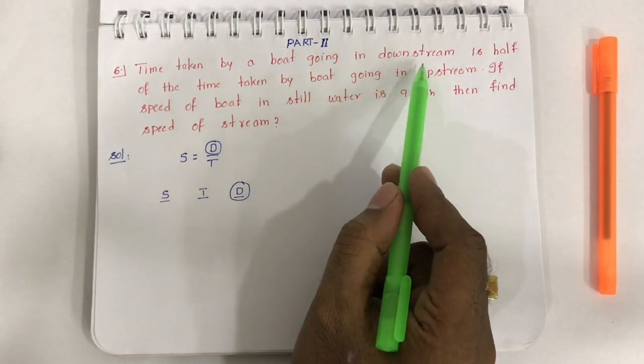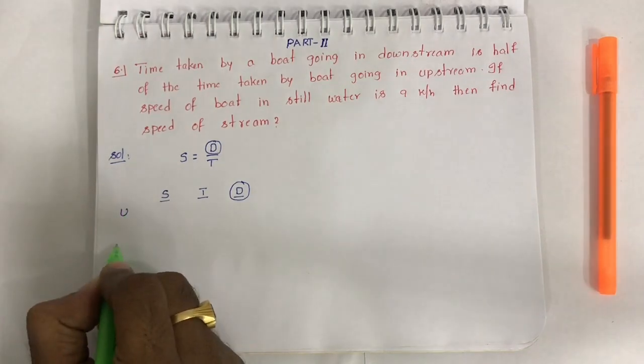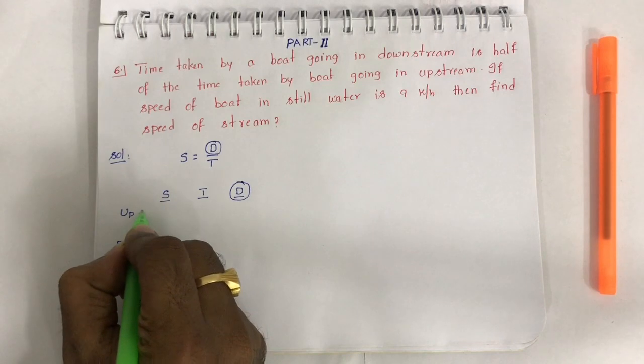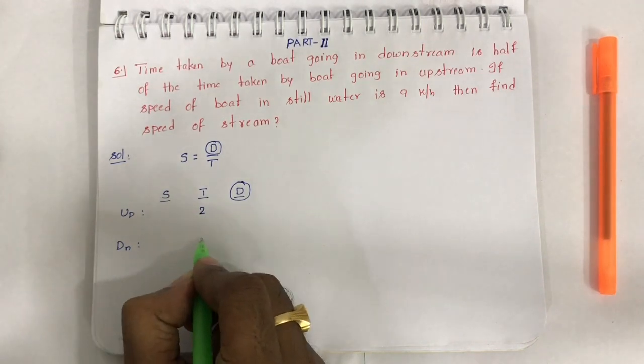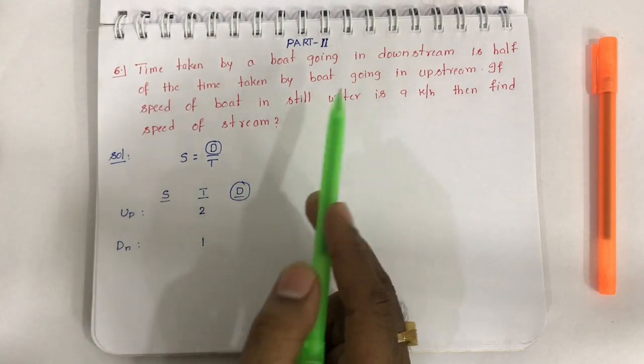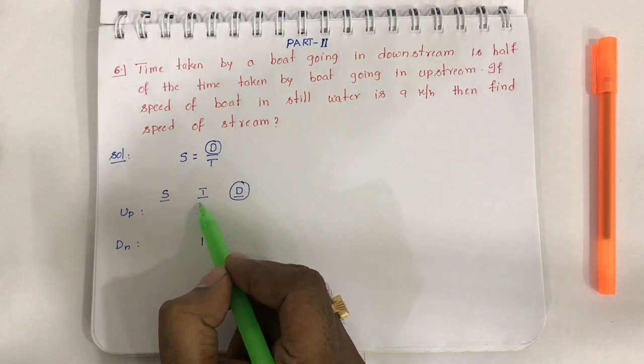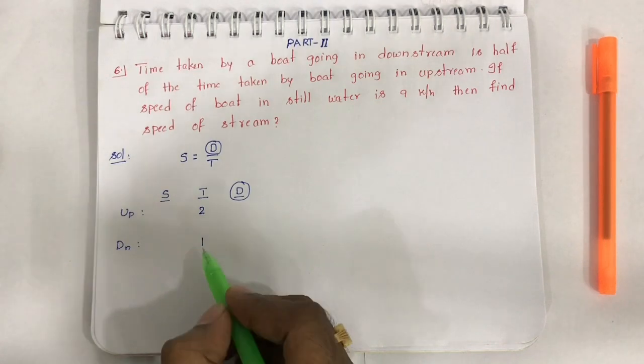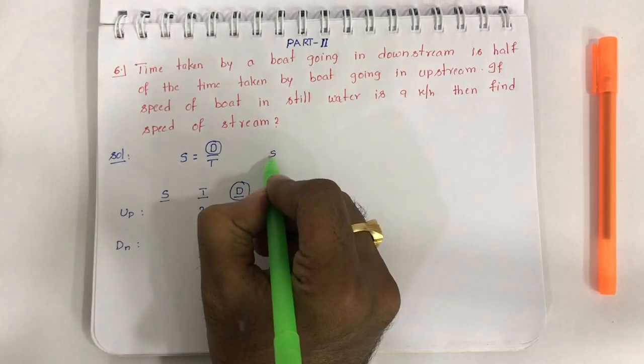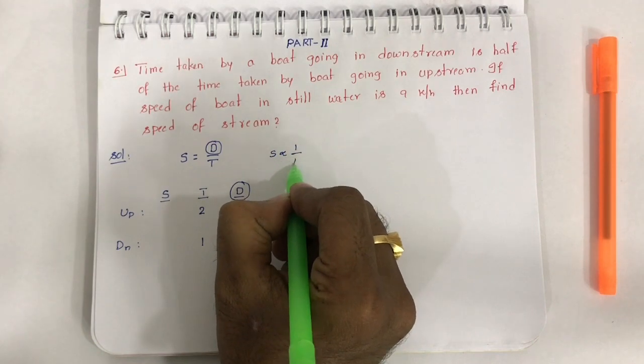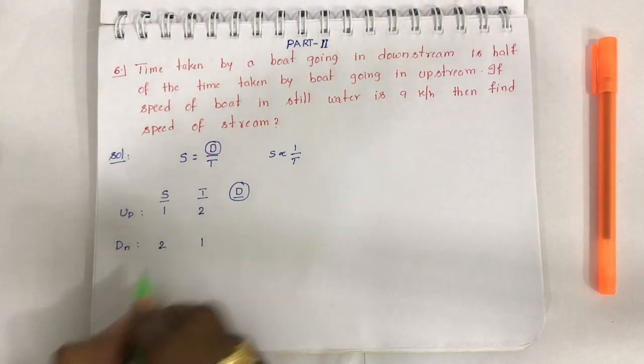Distance is constant. Speed and time are variables. Time taken by the boat going in downstream is half of the time taken by the boat going in upstream. So let us say upstream and downstream. If upstream takes two hours, downstream takes one hour.